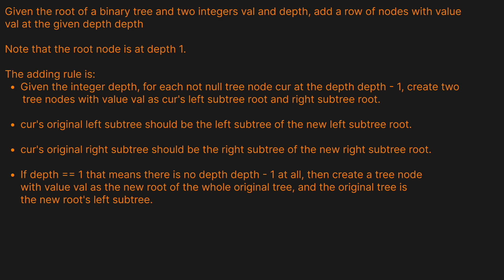Given the root of a binary tree and two integers val and depth, add a row of nodes with the value val at the given depth. Note that the root node is at depth one. For each non-null node cur at depth minus one, create two tree nodes with the value val as cur's left and right subtree roots. Cur's original left subtree becomes the left subtree of the new left root, and cur's original right subtree becomes the right subtree of the new right root.